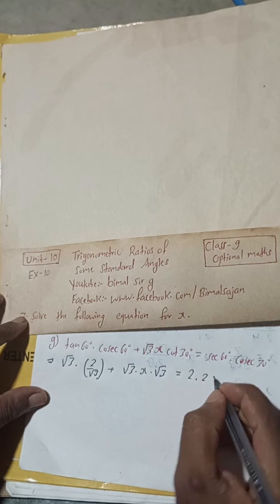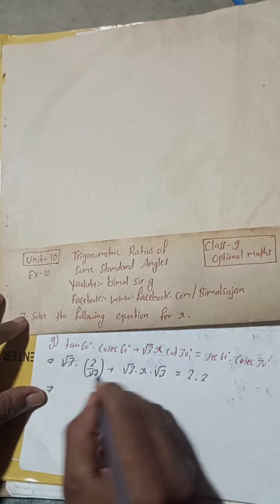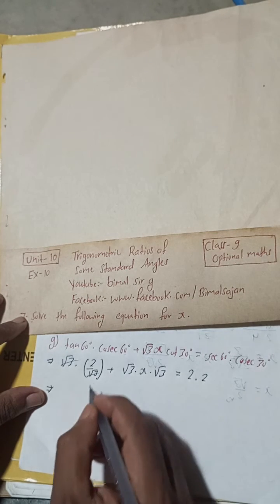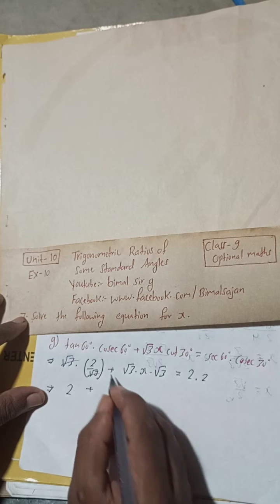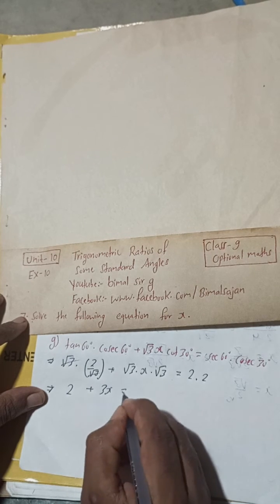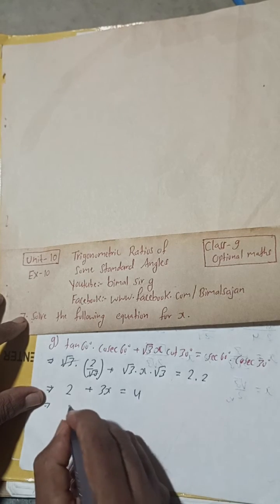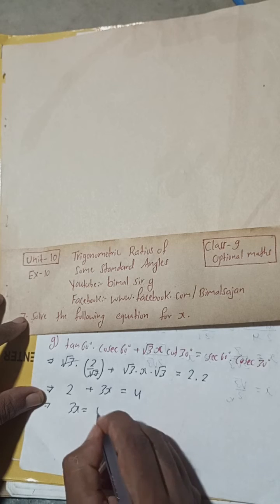Now root 3, root 3 squared is 3x, is equal to 2 times 2 is 4. This implies here 3x is equal to 4 plus 2.